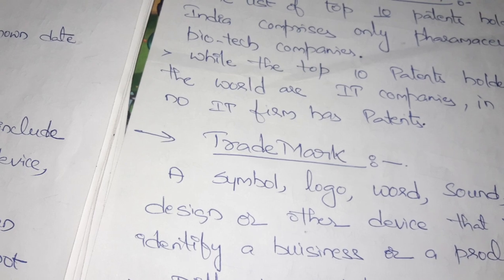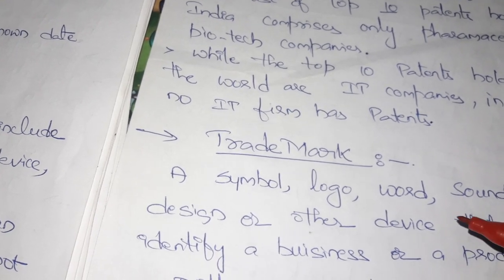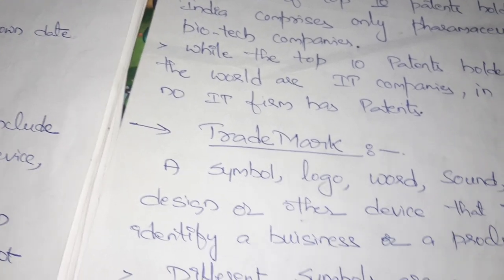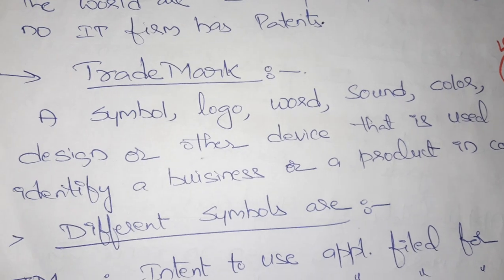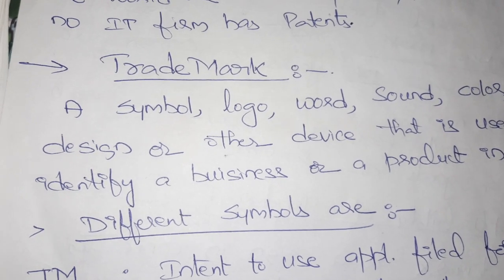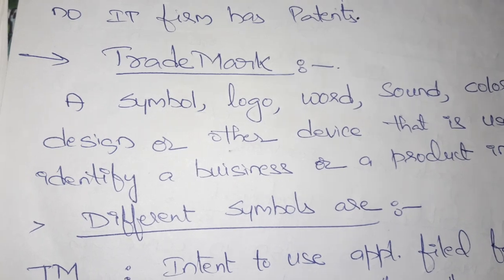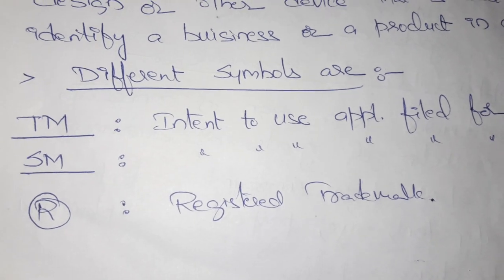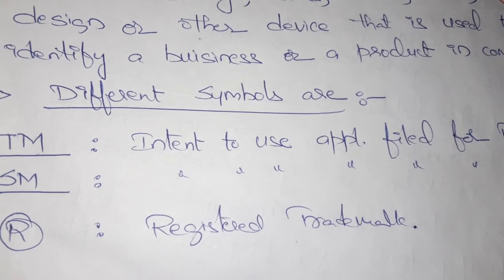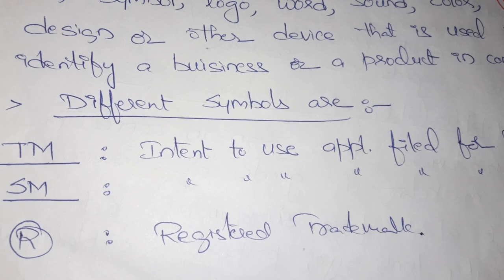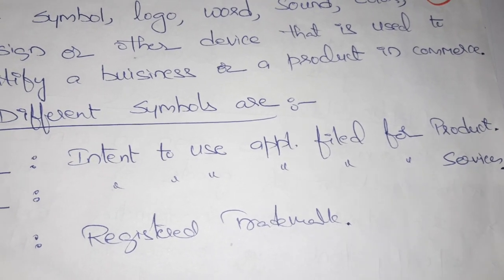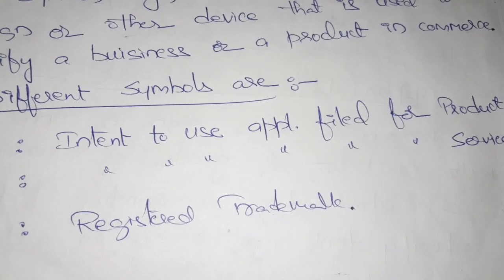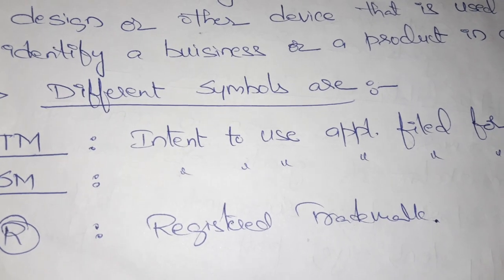For example, LG as a logo, LG as a word, ATEL using some sound, and so on — colors, designs, and other devices are all used to identify a business or product. The different symbols of trademark are TM, SM, and R. TM is the intent-to-use application filed for a product, and SM is the intent-to-use application filed for a service. R is the registered trademark symbol.